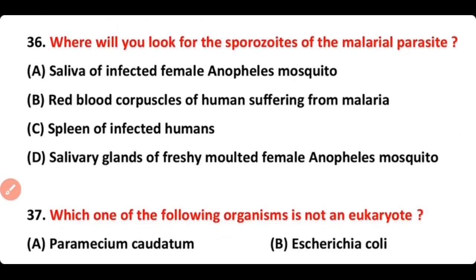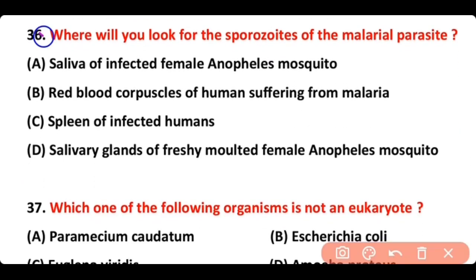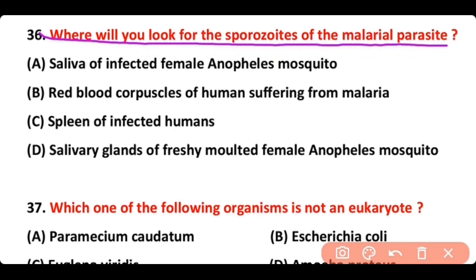Question number 36: Where will you look for the sporozoites of the malarial parasite? Options: in the saliva of infected female Anopheles mosquito, in red blood cells, in the corpuscles of humans suffering from malaria, in the spleen of infected humans, or in the salivary glands of freshly moulted female Anopheles mosquito. The correct answer is option A. Sporozoites of malarial parasites are present in the saliva of infected female Anopheles mosquito.